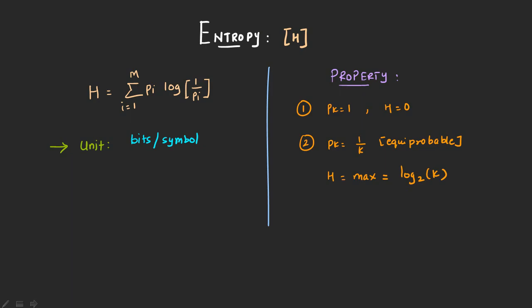Now we will talk about entropy. Entropy is represented by capital H. The formula is H is equal to summation of i is equal to 1 to m, pi log to the base 2 into 1 by pi. If you are talking about bits, this i represents if you have m messages, then you take the probability of all of them 1 to m. The unit is bits per symbol.